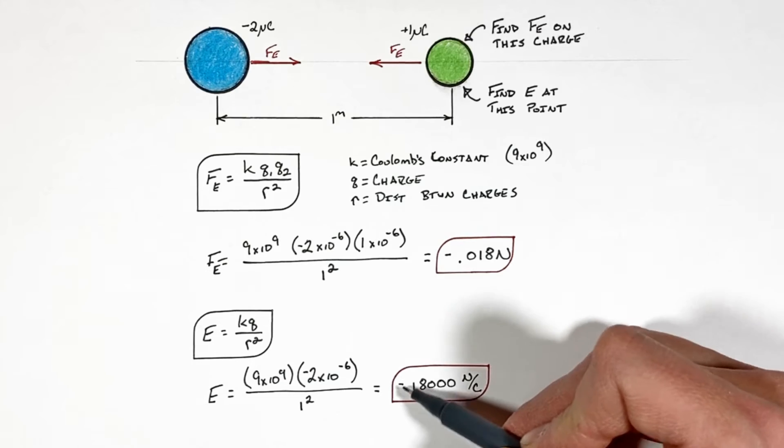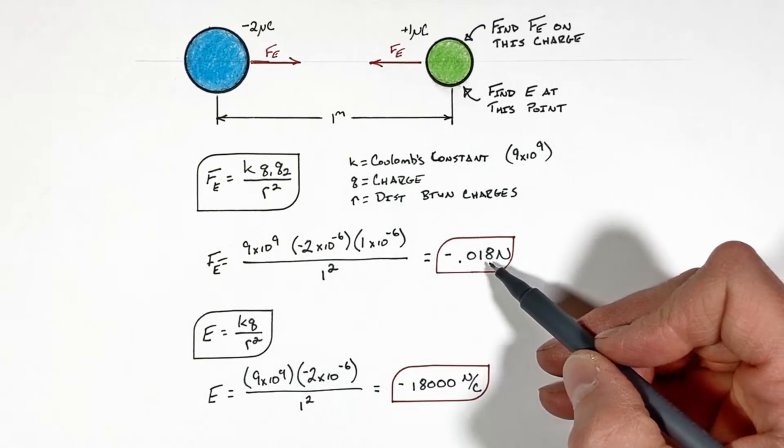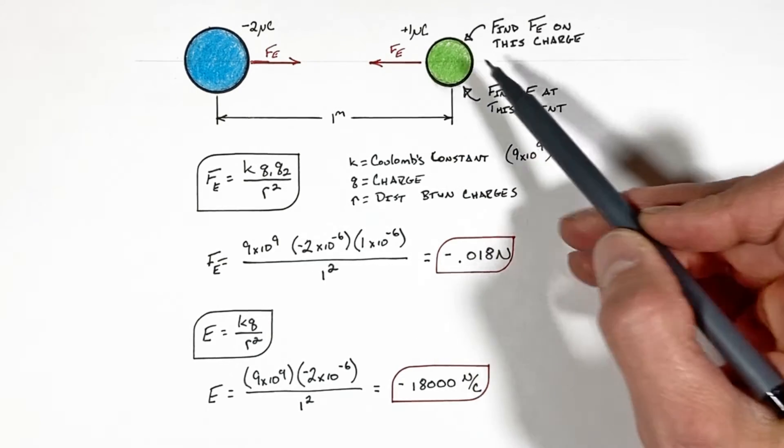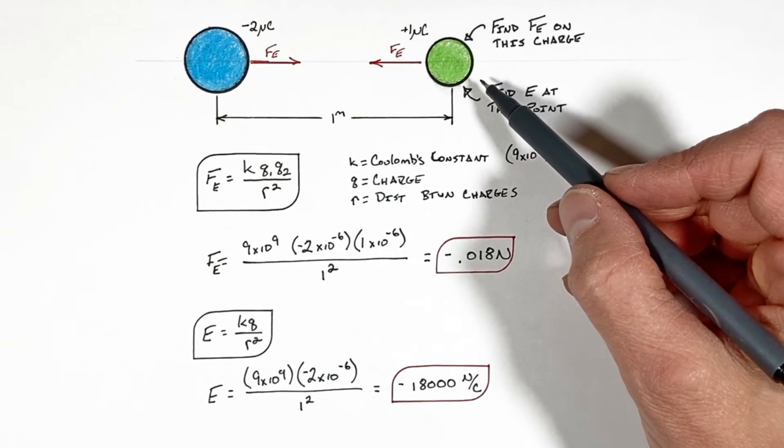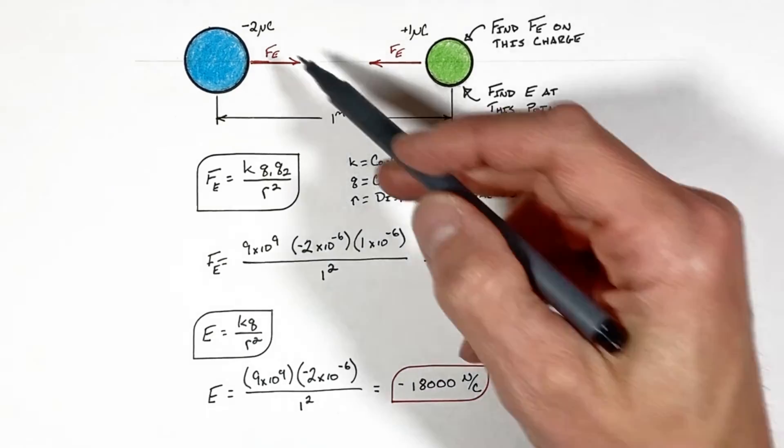And much like we did up here, let's talk about what this negative for electric field means. See, this negative just like before isn't telling us about whether or not the electric field is acting to the left or the right. What it's doing is telling us whether or not a positive charge placed in this field would be pulled towards or away from this charge.